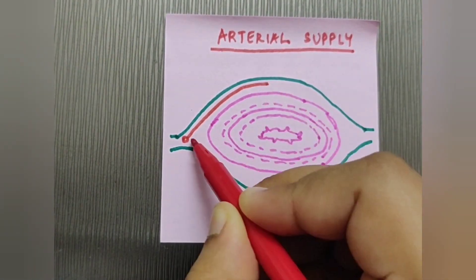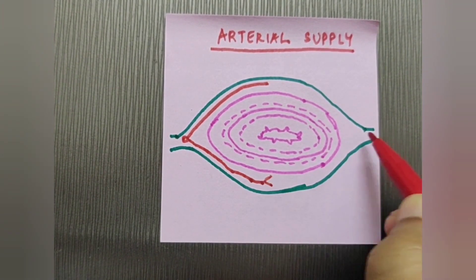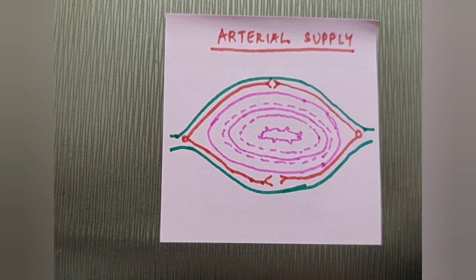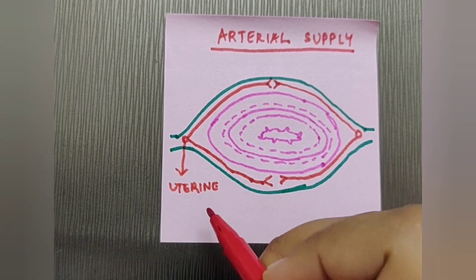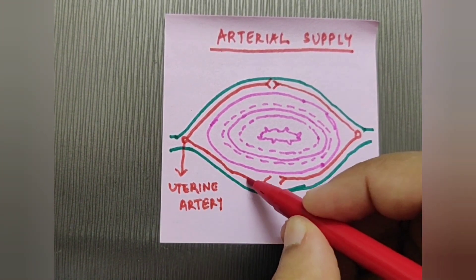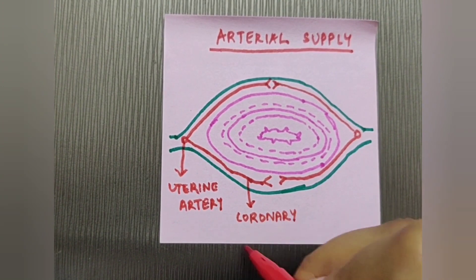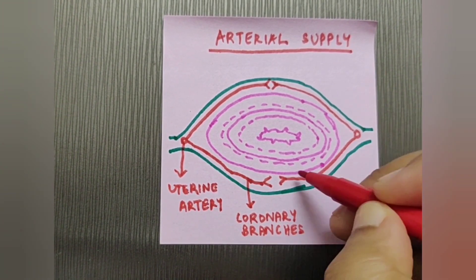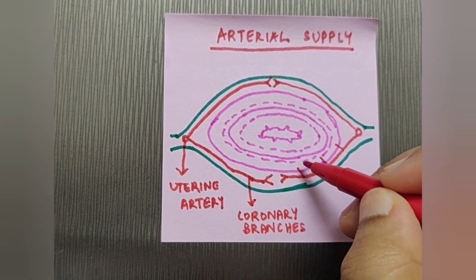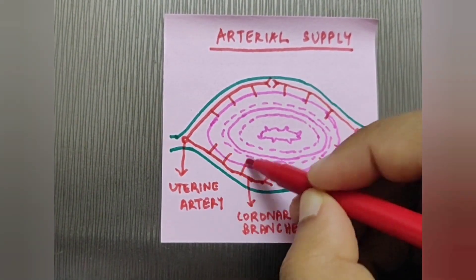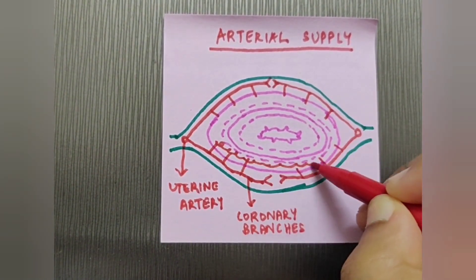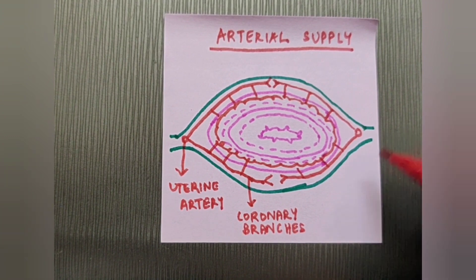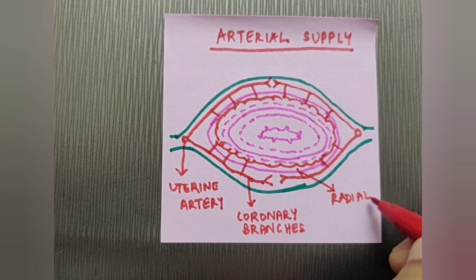The uterine artery gives anterior and posterior branches, which anastomose — the same happens on the other side. These branches are called coronary branches. The coronary branches then give several branches along the radius of the body of the uterus, hence these are known as radial branches.